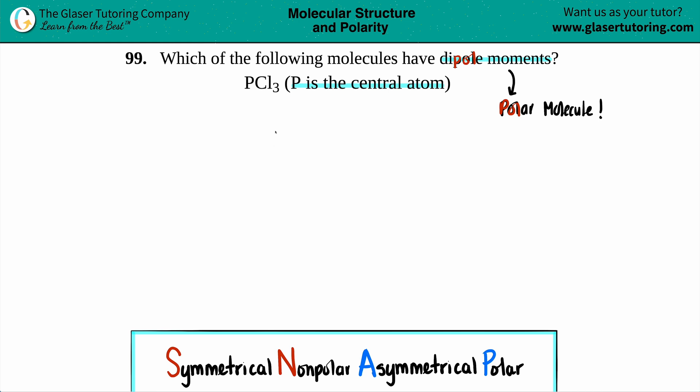For PCl3, we need phosphorus as the center, as they told us, and we have the three chlorines. For a Lewis structure, since we're not dealing with molecular geometry, nobody cares, so it doesn't really matter how you draw the three chlorines. I'm going to draw them like this. Now chlorines need a single bond.